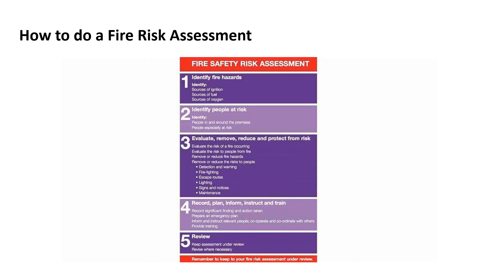Step two is identifying people at risk — people in or around the premises or people especially at risk. Step three is evaluating, removing, reducing and protecting from risk: we assume a fire is going to start, we know we can't get the risk to zero, so what's in the building to help people evacuate safely? Step four is recording, planning and informing — recording the fire risk assessment, training, cooperating with people. Step five is to continually review. This five-step approach is generally accepted by government guides and many risk assessment methodologies.